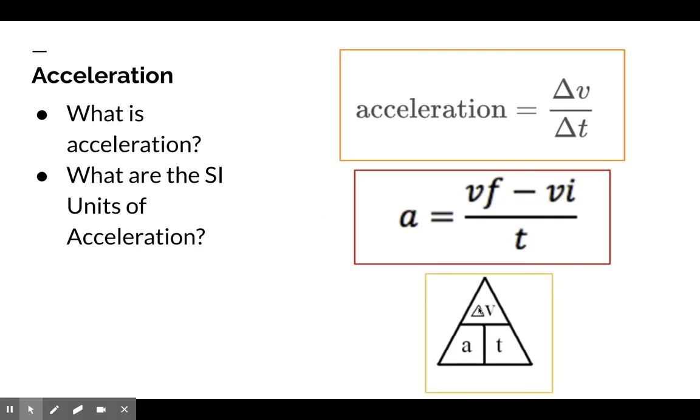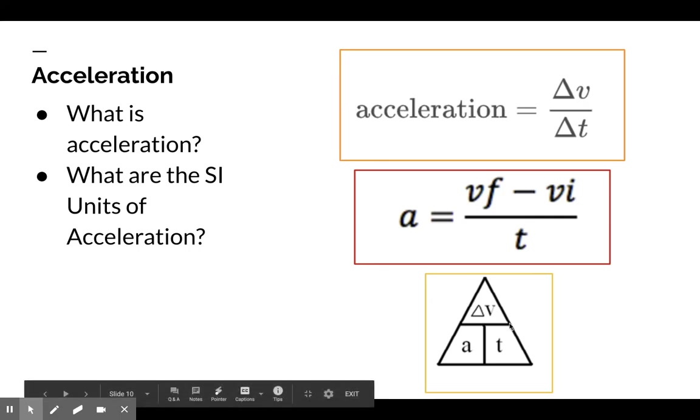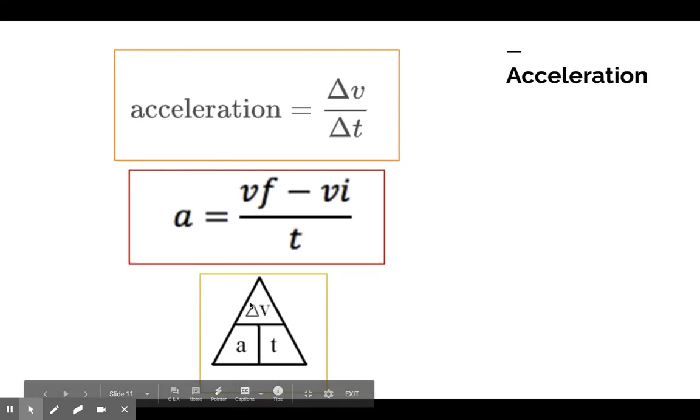We have a new triangle. This little triangle within the triangle, that triangle is delta. Delta means change, change in velocity. Change in velocity over acceleration and time. If I cover up the a, I can see it's change in velocity over time. And yes, we can rearrange this to solve for any one of these variables.